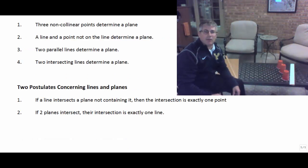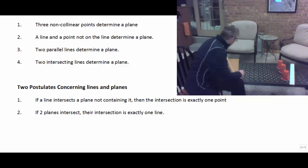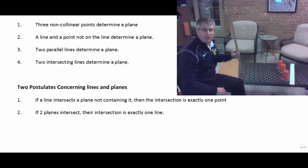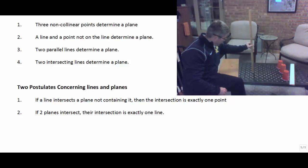Now we have a couple of postulates concerning lines and planes. One postulate says that if a line intersects a plane not containing it, then the intersection is exactly one point. If we imagine our tabletop here to be part of a plane, and my yardstick is a line, when that line comes through and intersects that plane, the intersection is exactly one point. The line can only intersect the plane at one point, and then it proceeds through the plane. That point where the line intersects the plane is called the foot of the line.